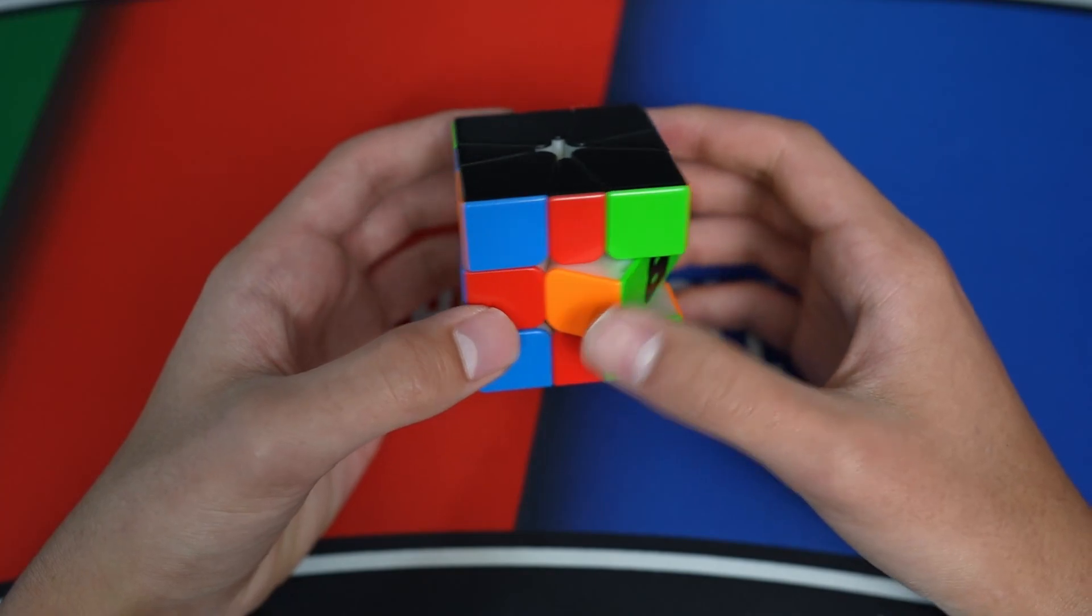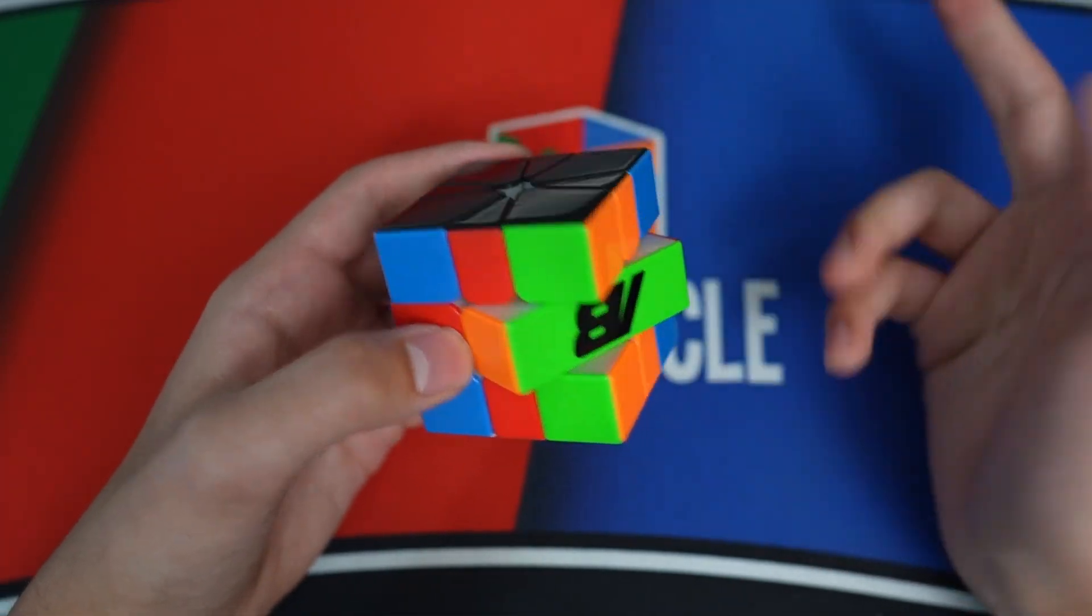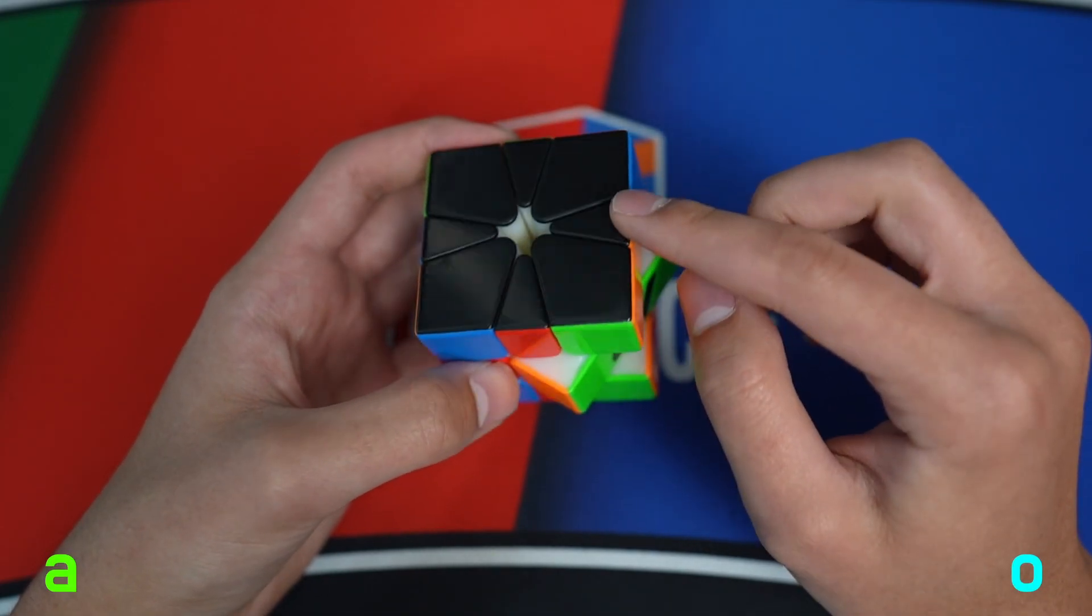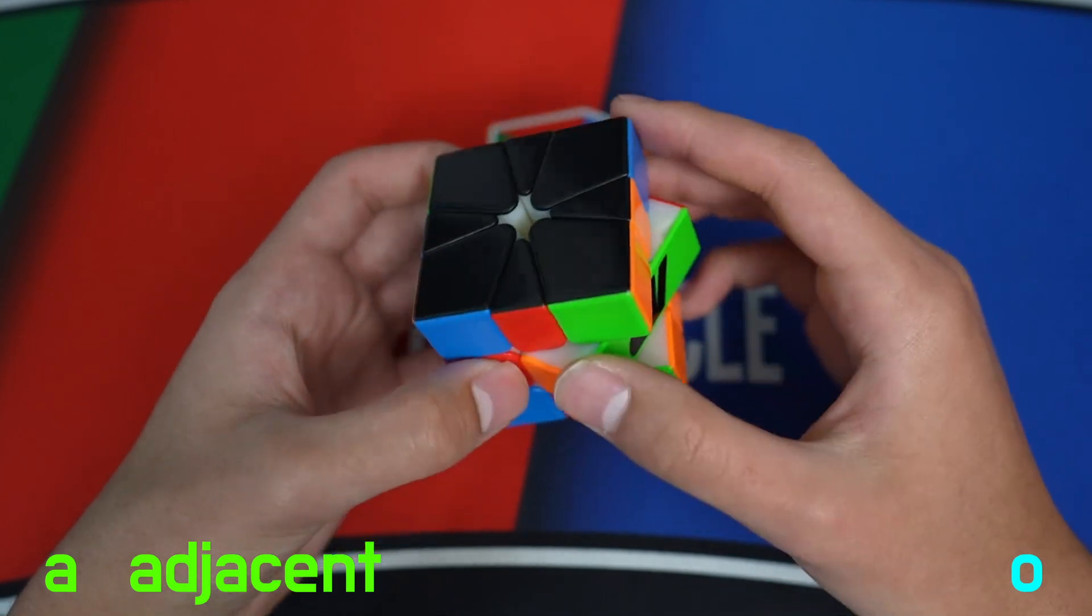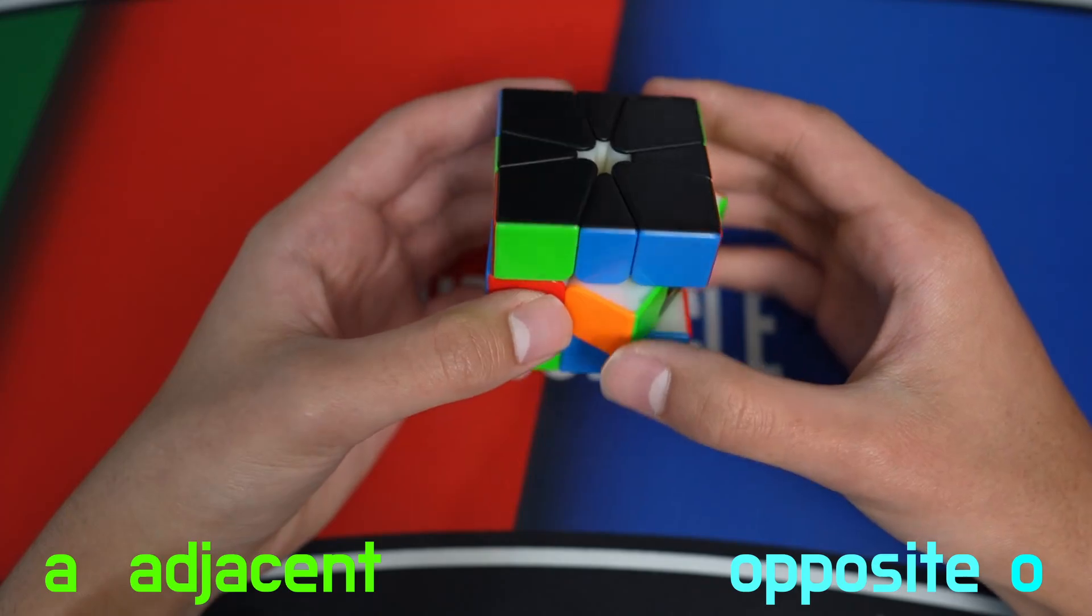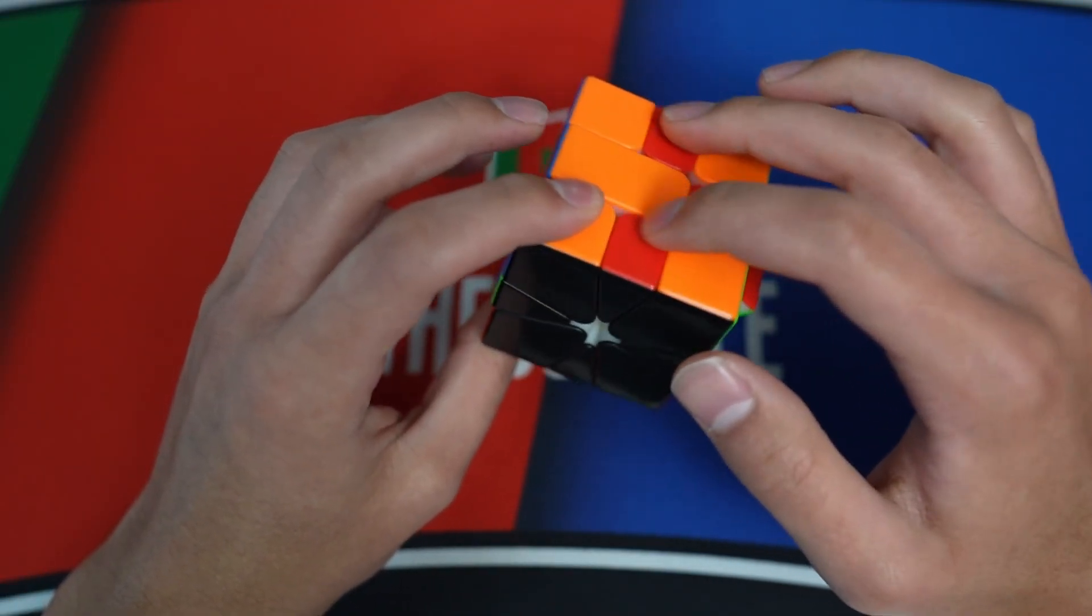Alright, G perms are probably the most confusing, because they're confusing in general. But in Maka naming, they have two letters after the G. The first letter is either A or O, and the A stands for adjacent, which means the block is adjacent to the headlights. And O stands for opposite, when the block is opposite of the headlights, or when the sticker in the middle of the headlights is opposite, just like this.